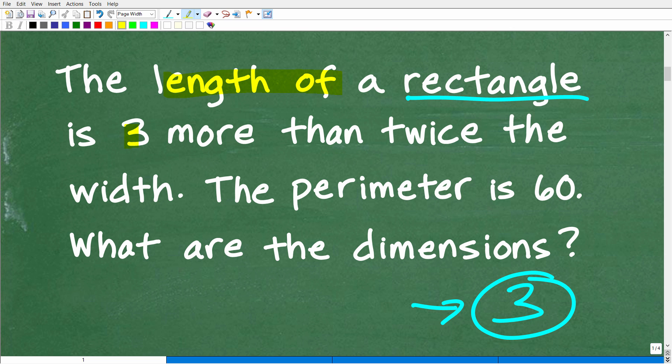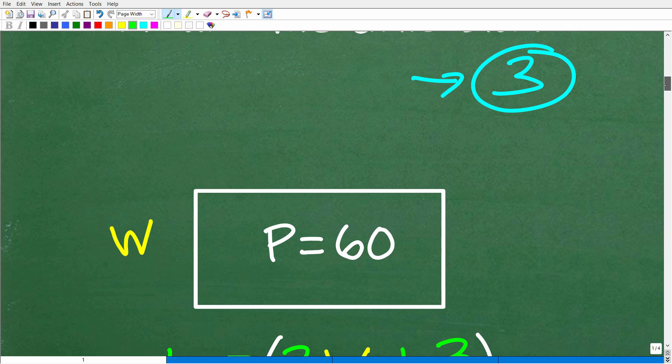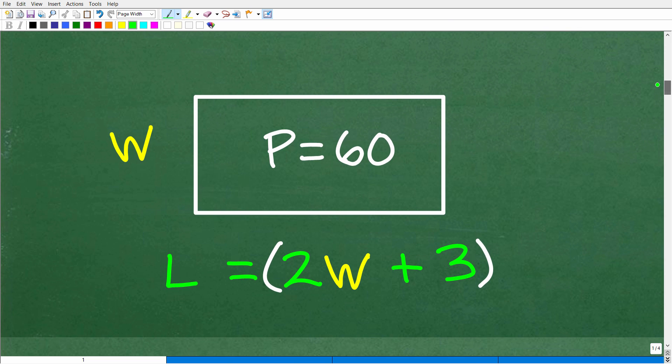So it's probably a good idea just to sketch out a rectangle and then interpret all these different parts of the problem, maybe visually. The length of this rectangle is three more than twice the width. This part could be a little bit confusing. And then of course, we're going to need to understand what the perimeter of a rectangle means as well. So let's sketch out a lovely little rectangle.